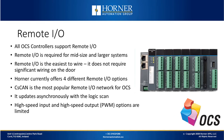Now let's talk about remote IO. All OCS controllers support remote IO. If you've got a larger application where the built-in IO is not sufficient, then you need to add it. In many ways it's easier to wire because it's mounted on the back plate with an interposing terminal strip — it doesn't require significant wiring on the door. A CAN cable or Ethernet cable is all you should need. Horner offers four different remote IO options. C-Scan is our most popular remote IO network. It's robust, it's plug and play, and it's inexpensive. It updates asynchronously with the logic scan, however there are fewer high-speed input and output options for remote IO systems.